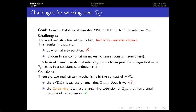Therefore, we cannot directly adapt the protocols for fields to Z_{2^p}. In the context of multi-party computation, there are two mainstream candidates. The first is the lifted Z_{2^p} idea, where authentication is over a large field Z_{2^{p+s}}. However, we don't know whether it works over Z_{2^p}. The second is the Galois ring idea, where a large ring extension of Z_{2^p} is used to achieve negligible soundness error. In this work, we choose the Galois ring idea.